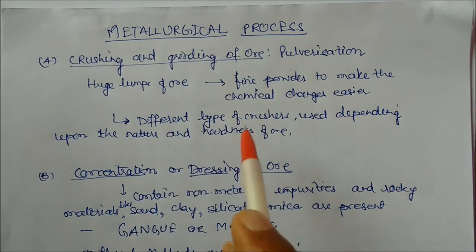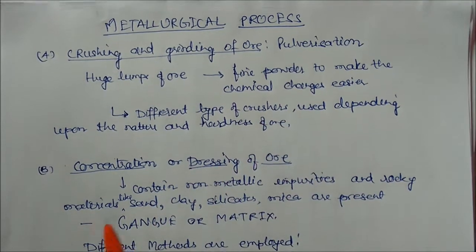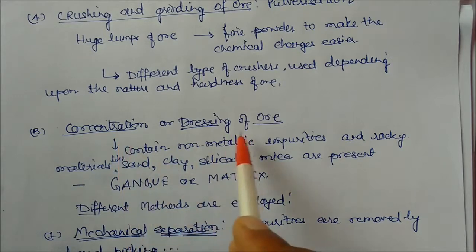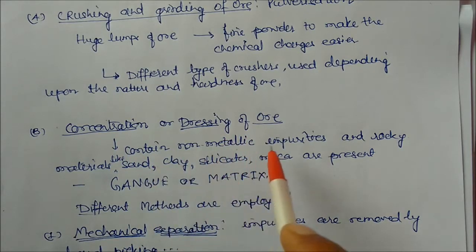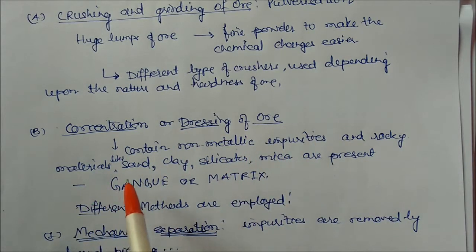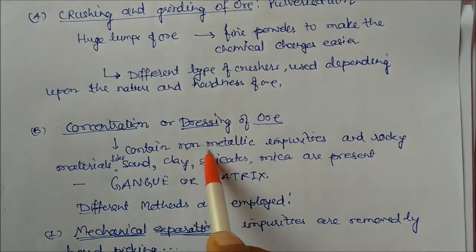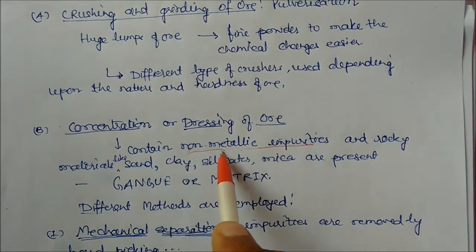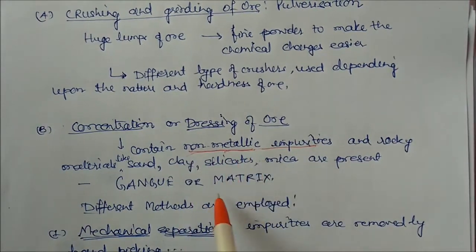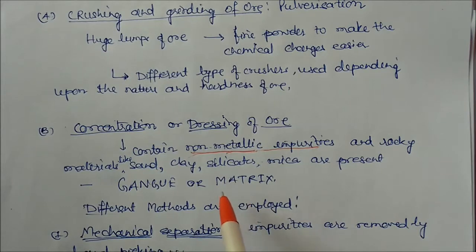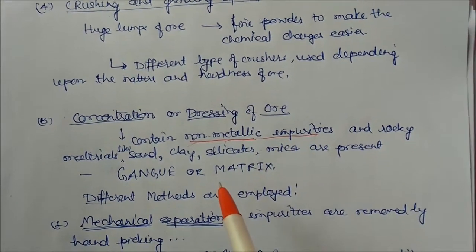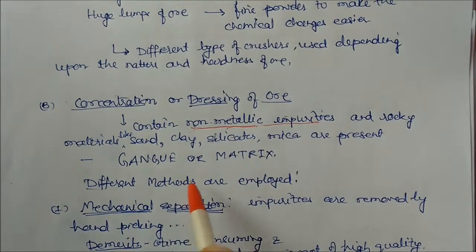After crushing, the next step is concentration and dressing of ores. Ores contain some non-metallic impurities and other rocky matters like sand, clay, silica, and mica. These non-metallic impurities are called gangue or matrix. We need to remove this gangue or matrix from the ores to get more concentrated ores, and for this different methods are employed.